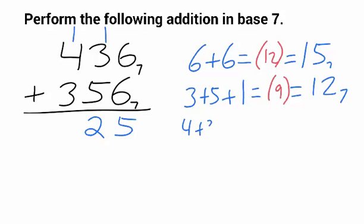And now I've got 4 plus 3 plus 1, and that's equal to 8. It's still 8; it's always been 8. We just write it differently as 11 in base 7. So I put the 1 there and then carry the 1. And there's the answer: 1125 base 7.